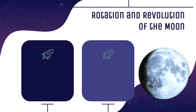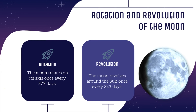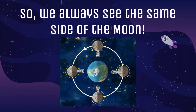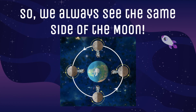Rotation and revolution of the Moon: the Moon rotates on its axis, just like planet Earth, once every 27.3 days. The Moon also revolves around the Earth once every 27.3 days. Because of this, we always see the same side of the Moon. The astronaut shown is rotating on the Moon's axis, while at the same time the Moon is revolving around the Earth.